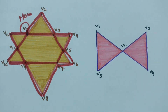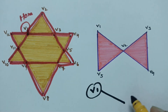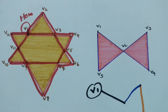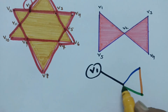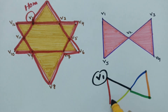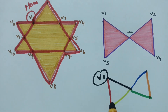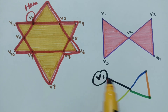Looking at another graph with V1 as home: V1 to V2, then V3, V4, back to V2, then V2 to V5, and coming back to V1. Each and every edge is crossed only once and we return to V1. This is called an Eulerian circuit.